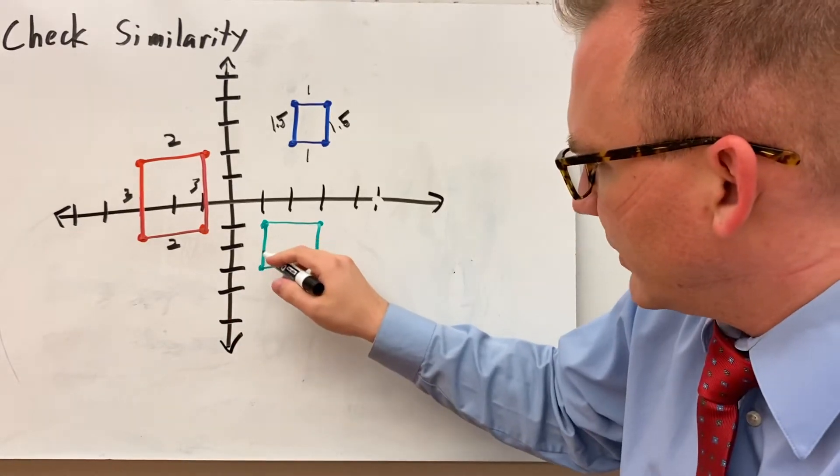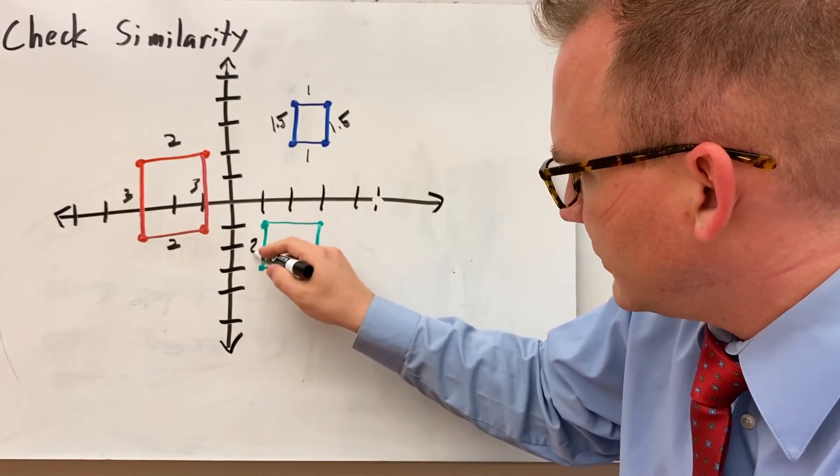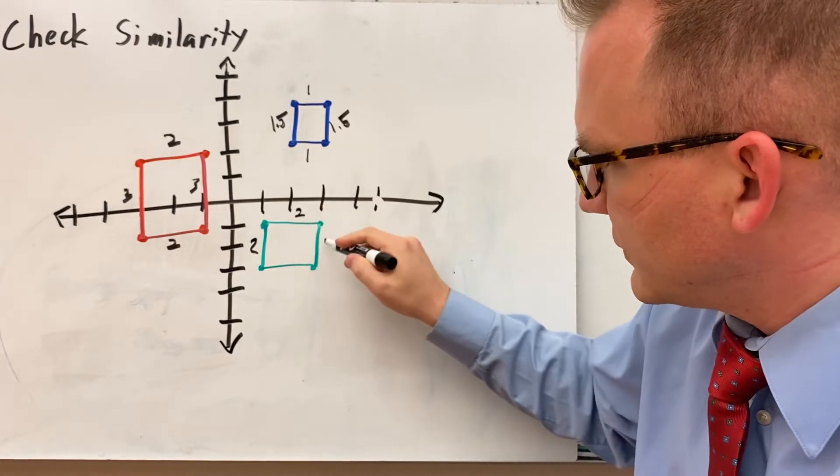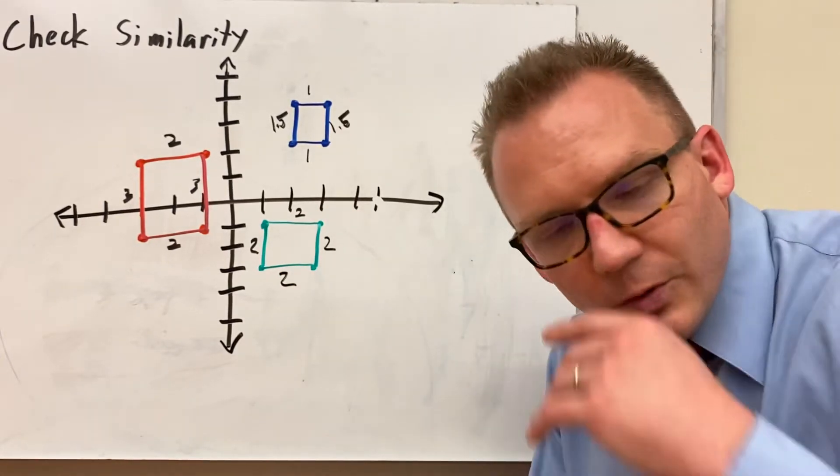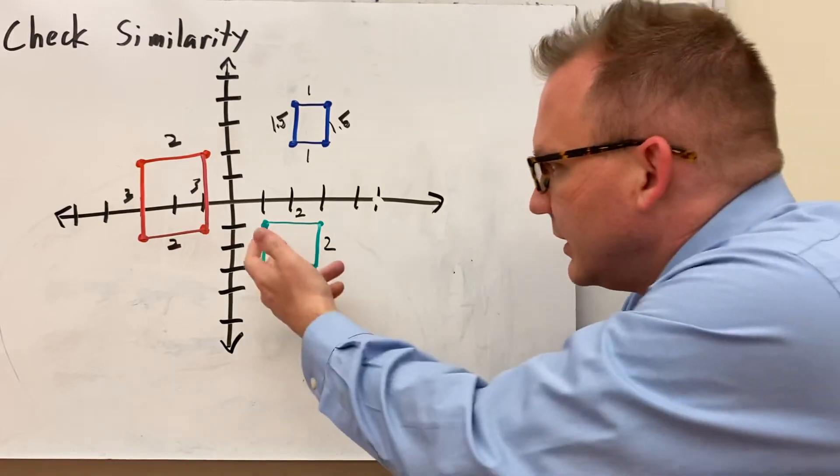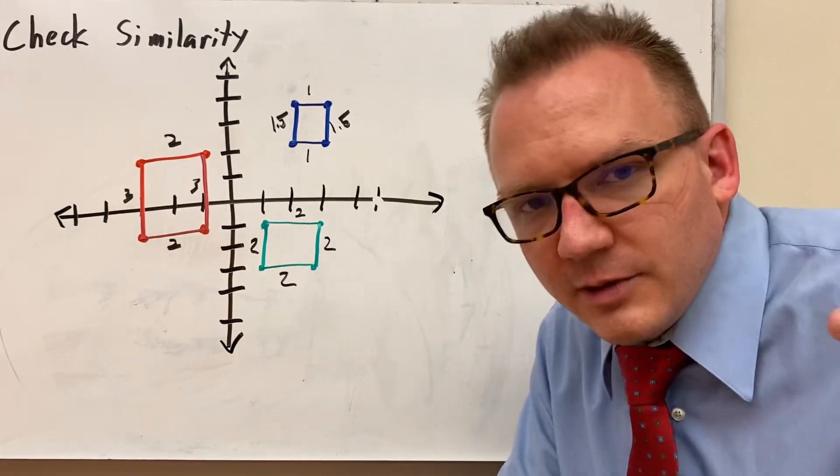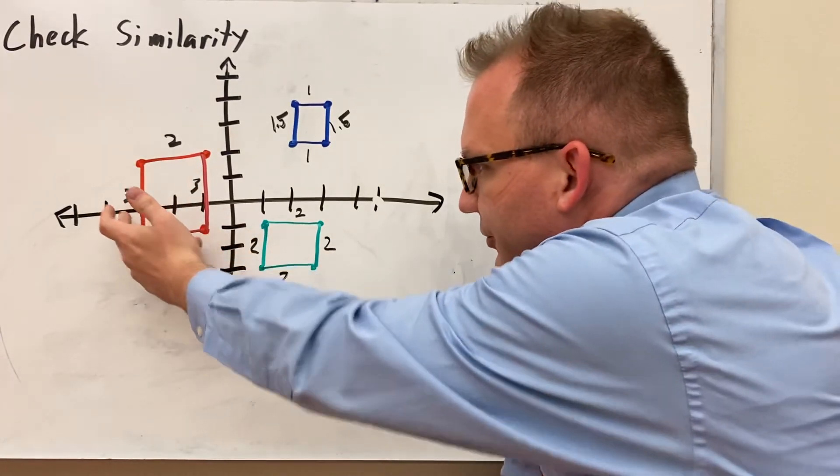So, this rectangle has a side length of 2, 2, oh, this is a square. Everything is 2. So, when I look here, I can tell you that a square and this rectangle, they're not going to be similar. Because the 3 to the 2, and then the 2 to the 2, this is 2 times 1, and 3 times 1 is not 2, so they're not similar.